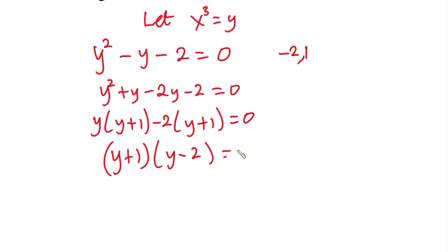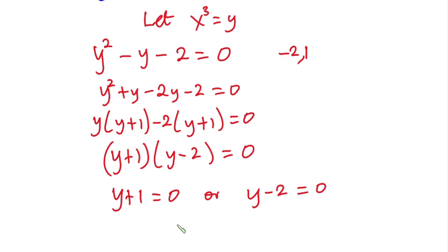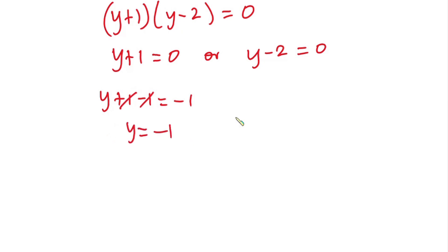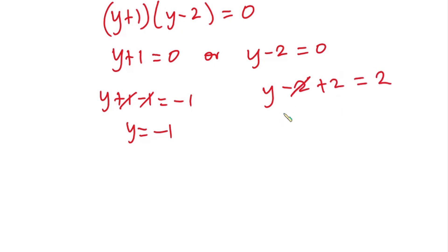From here we can say that y plus 1 equals zero or y minus 2 equals zero. Solving: from y plus 1 equals zero we get y equals negative 1, and from y minus 2 equals zero we get y equals 2.